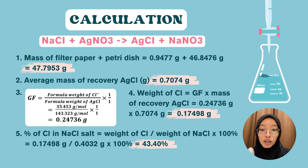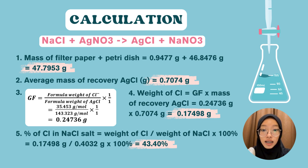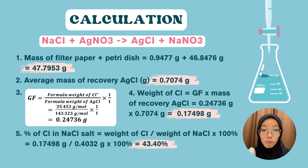The weight of chloride is calculated by multiplying the gravimetric factor by the mass of recovered silver chloride, which equals 0.17498 grams. Finally, the percentage of chloride in sodium chloride salt is calculated using the weight of chloride over the weight of sodium chloride, multiplied by 100%. The percentage of chloride in sodium chloride salt is 43.40%, which differs by 17.26% from the theoretical value.